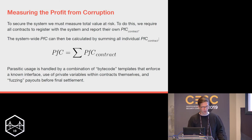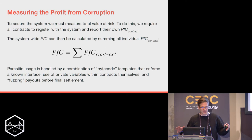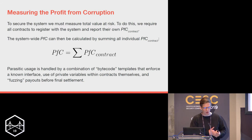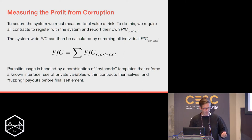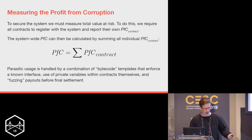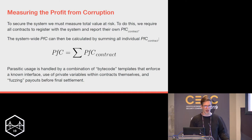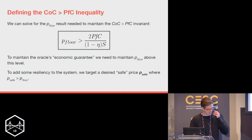For our Profit from Corruption number: to secure the system we must measure the total value at risk. All contracts using the system must comply with an interface where they report their own individual PfC value. The system-wide PfC can be calculated in a worst-case analysis by summing that PfC across all contracts. There is also a question of parasitic or unauthorized usage, which we have an interesting solution for.